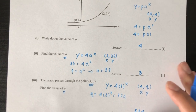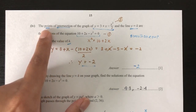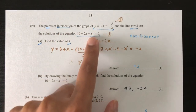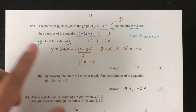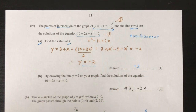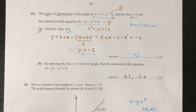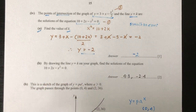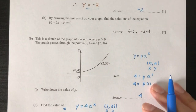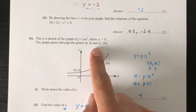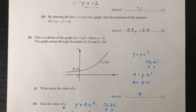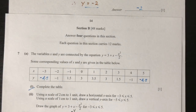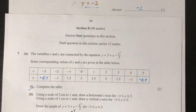So that will be question number 7. To recap: whenever you need to find the intersection of two graphs, solve simultaneous equations. Always show your work on your graph for full marks. And whenever you're given values, use them to find your answers. I hope that was useful — thank you for watching, see you soon.